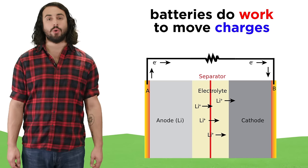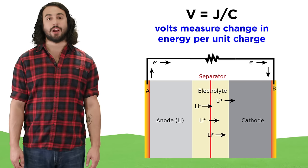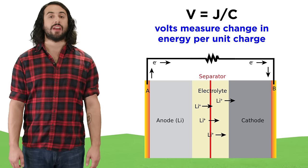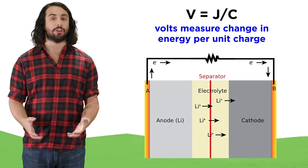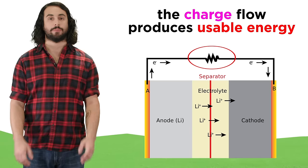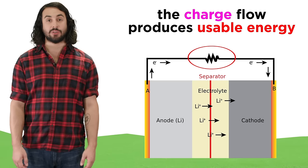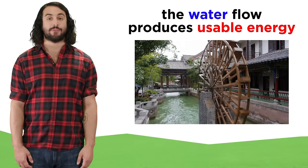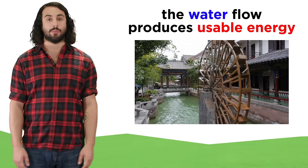Batteries do work to move charges, so volts are not a measure of energy, they are a measure of change in energy per unit charge. As charge flows, it produces usable energy, like the way that flowing water can push a water wheel as it moves past.